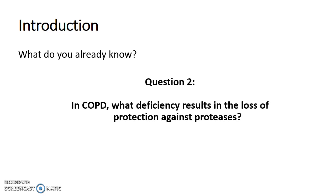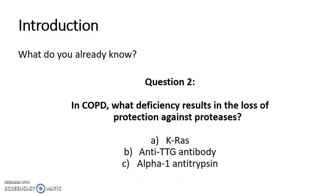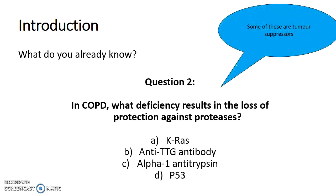In COPD, what deficiency results in the loss of protection against proteases? Is it KRAS, anti-TTG antibody, alpha-1 antitrypsin, or p53? Some of these are tumour suppressors, so make sure you know your tumour suppressors. The answer is alpha-1 antitrypsin.